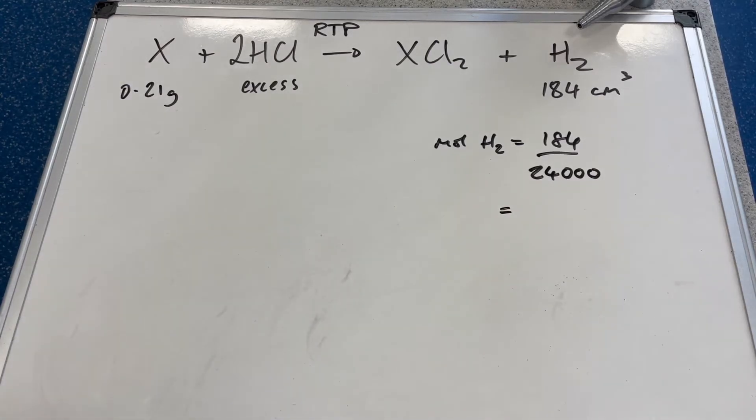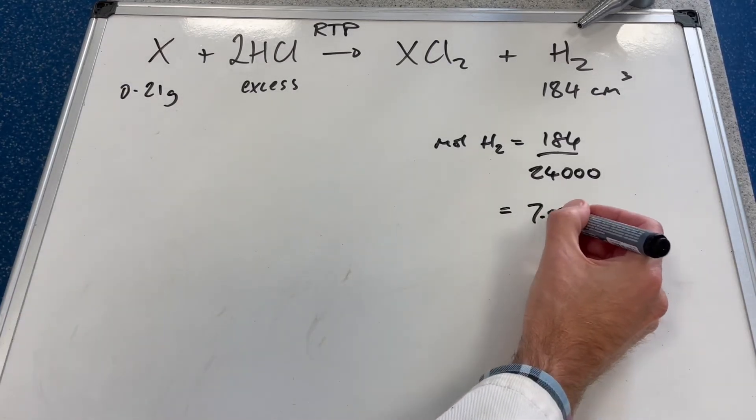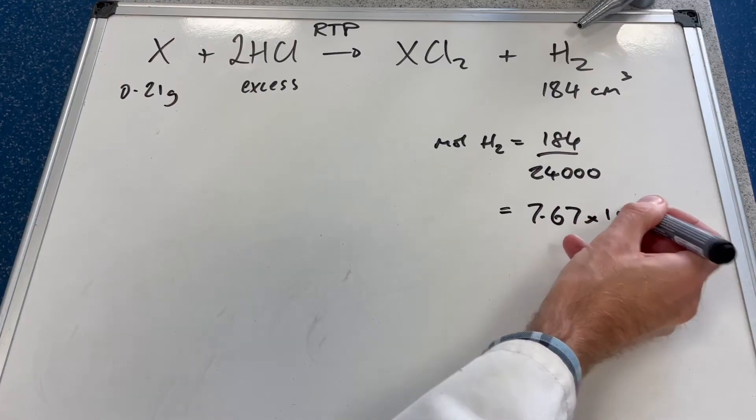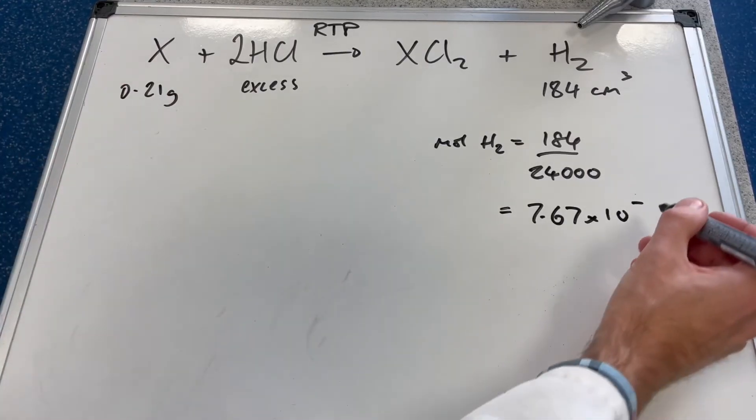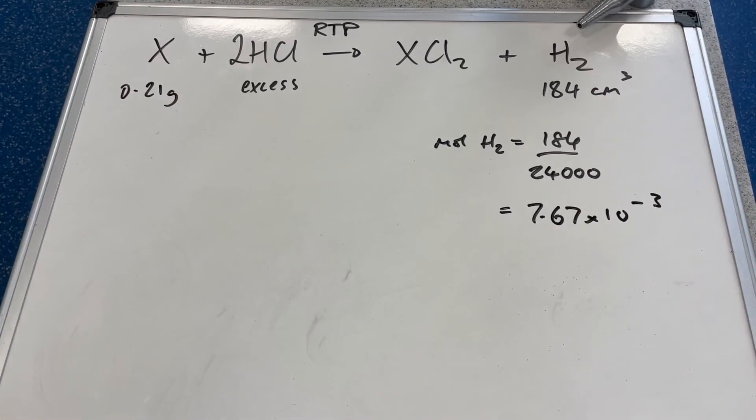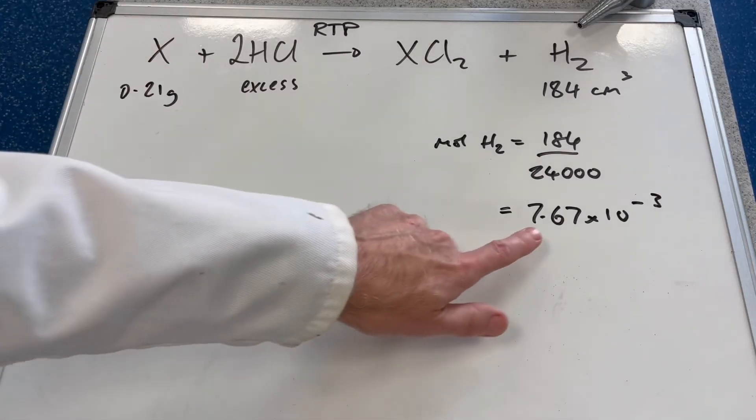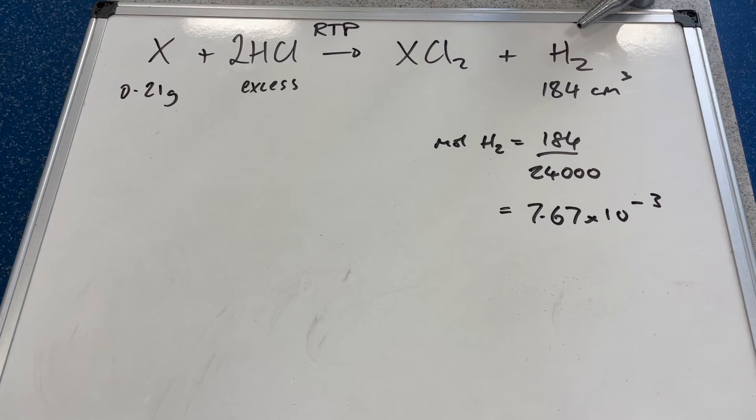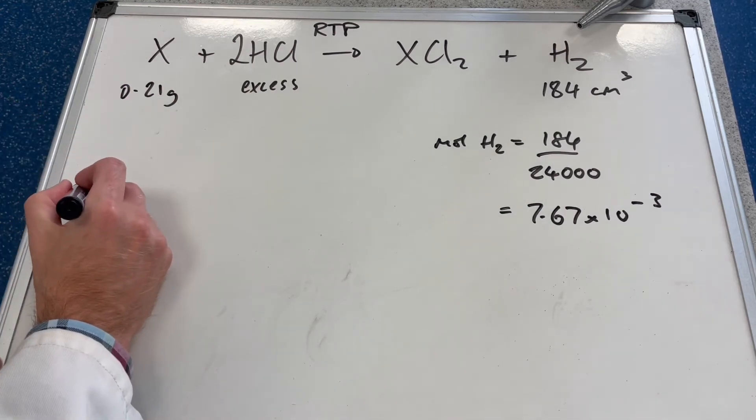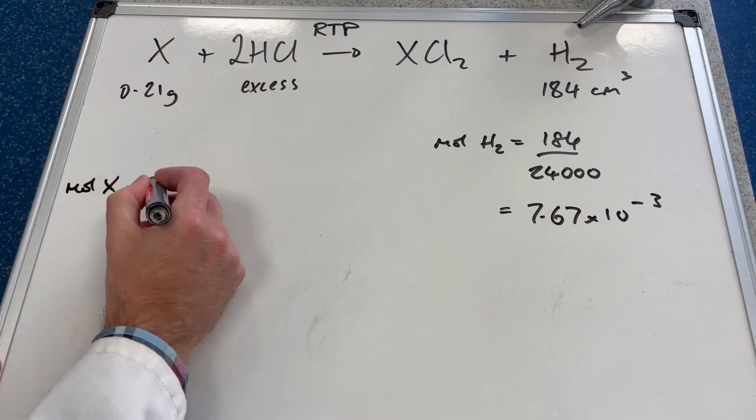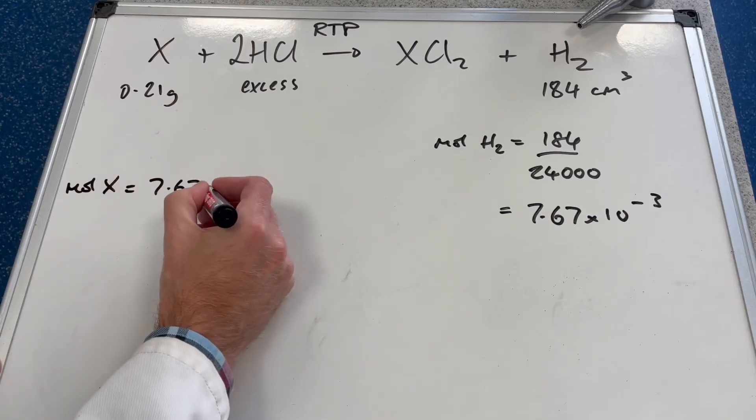The next thing we're going to say is because of the ratio between X and hydrogen in the equation, there must have been the same number of moles. This many moles of X in that 0.21 grams. So the moles of X must also be 7.67 × 10⁻³.